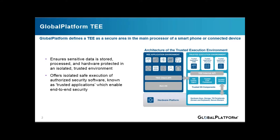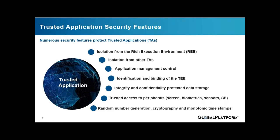The TEE offers a level of protection against attacks that originate in the rich OS environment. It also assists in the control of access rights and housing sensitive applications and associated data. The primary purpose of the isolated execution environment provided by the TEE is to protect the device and the Trusted Application assets. Global Platform TEE standard achieves this by defining the following security features for the Trusted Application. First, isolation of all Trusted Applications from the rich OS or the rich execution environment.